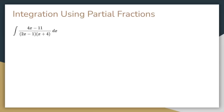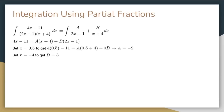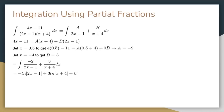Partial fraction decomposition is great when you want to integrate a rational function where the denominator is a factored polynomial. To integrate this function, we would break it down into partial fractions. Here is a quick technique to solve for A and B. To solve for A, you set x equal to the value that will make the coefficient of B equal to 0. In this case, we set x equals 0.5 to get that A equals negative 2. Similarly, to solve for B, you set x equal to the value that would make the coefficient of A equal to 0. In this case, we set x equals negative 4 to get B equals 3. Plugging the values for A and B back, now we have a simple integral that can be solved using u substitution, so here is our final answer.